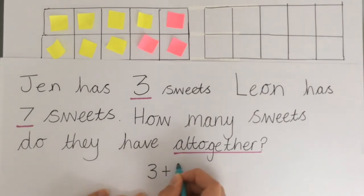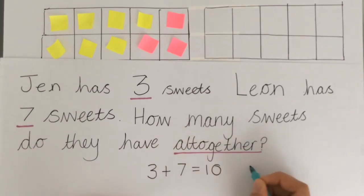So now we can write that as a number sentence, just to check. So three, add seven, equals ten. Oh, look, that's a number bond.